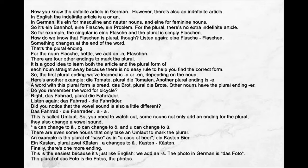Now you know the definite article in German. However, there's also an indefinite article. In English, the indefinite article is 'a' or 'an'. In German, it's 'ein' for masculine and neuter nouns and 'eine' for feminine nouns. So it's 'ein Bahnhof', 'eine Flasche', 'ein Problem'.